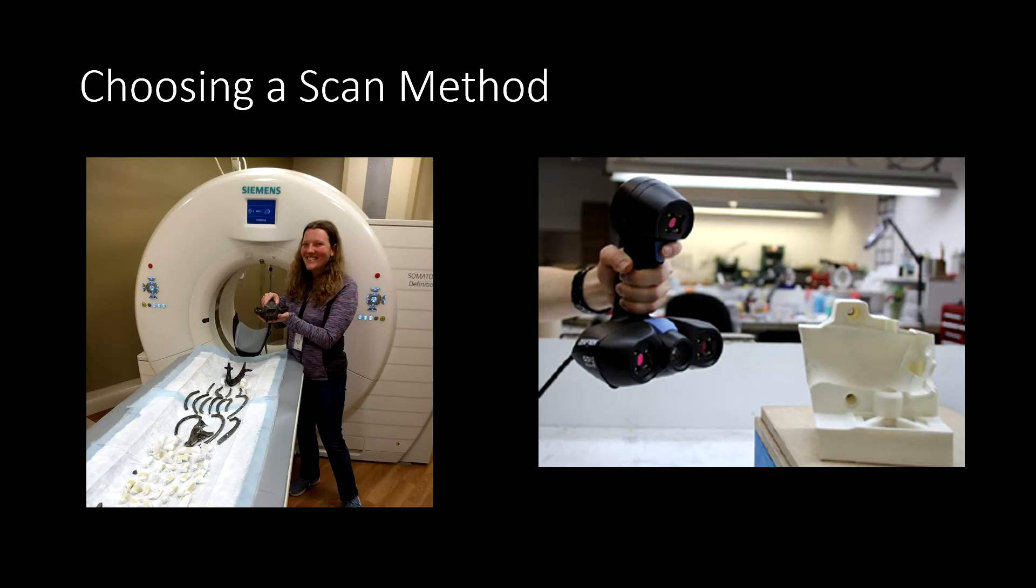However, surface scanning does have some benefits over CT scanning. Surface scanning can be portable, while CT scanning is never portable. Surface scanning works well on much larger objects that wouldn't fit into even a medical CT scanner. And surface scanners tend to be cheaper than the very expensive CT scanners.